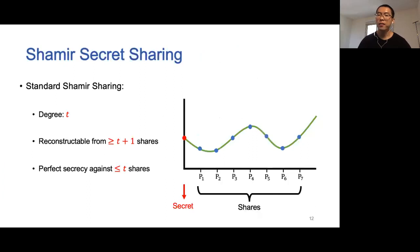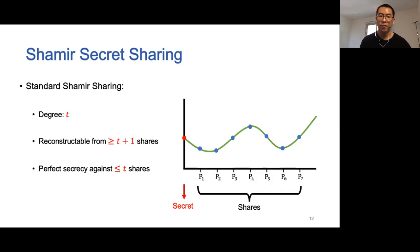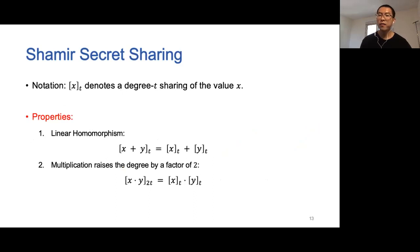Our work makes use of standard Shamir secret sharing. Informally, a Shamir secret sharing uses a random polynomial to hide a single secret at the evaluation point zero. Recall that t is the number of corrupted parties. In our construction, we use Shamir secret sharing with degree t. It satisfies that the secret can be reconstructed with any t+1 shares, and any t shares are independent of the secret. We use the notation [x]_t to represent a degree-t Shamir secret sharing of the value x.